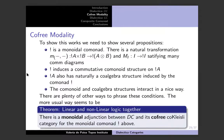We need to show several propositions: first, that bling is a monoidal comonad — there is a natural transformation with a tensor structure. Each bling induces a commutative comonoid structure on each object bling-A. Each bling-A also has a natural coalgebra structure induced by the comonad, and the comonoid and coalgebra structures interact in a nice way. There are plenty of different ways to phrase these conditions.